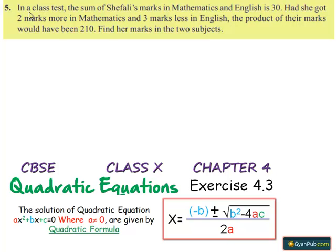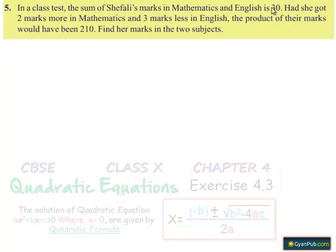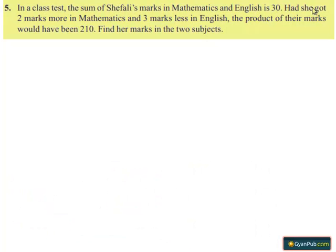Coming to the fifth problem. In a class test, the sum of Shefali's marks in Mathematics and English is 30. Had she got two marks more in Mathematics and three marks less in English, the product of their marks would have been 210. Find her marks in the two subjects.